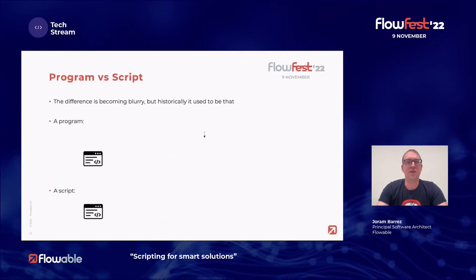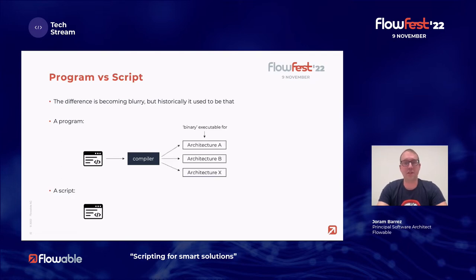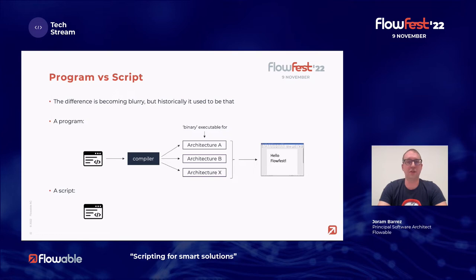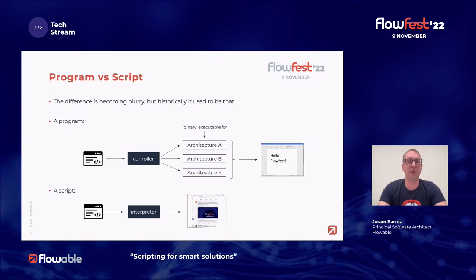In the computer industry there is a difference between programs and scripts, though these days the lines are getting blurry. Historically there are two big differences. A program starts from source code fed into a compiler, which creates a binary for various architectures — for Intel Windows, Mac Intel, or M1/M2. A good example is Microsoft Word, which looks different on Windows versus Mac but shares parts of its codebase. A script, on the other hand, is fed into an interpreter that runs the source code as it reads it. A browser is a good example — the website comes in with HTML and JavaScript, and the browser just interprets and executes those instructions.